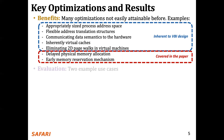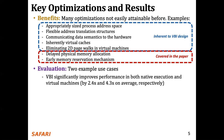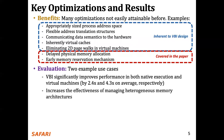We demonstrate the benefits of VBI with two example use cases. First, we experimentally show that VBI significantly improves performance for both native execution and virtual machine environments, by 2.4 and 4.3 times respectively on average across four different benchmark suites. Second, we show that VBI significantly improves the effectiveness of heterogeneous main memory architectures.